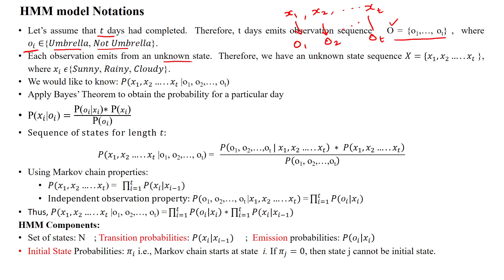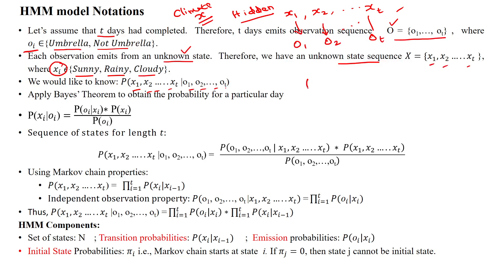Each observation emits from an unknown state — these states are hidden states. Because the person inside does not know about the climate, the climate is denoted with the variable x, which is hidden or unknown to the person locked inside the room. That is why it is called a hidden state. Therefore, we have a sequence of unknown states x1, x2, until xT for time period T. Each state may be sunny, rainy, or cloudy. We would like to know the hidden states from the set of observations, denoted by probability of hidden states given observations: P(xi | oi), for i from 1 to T.